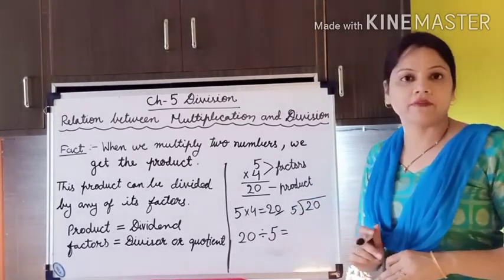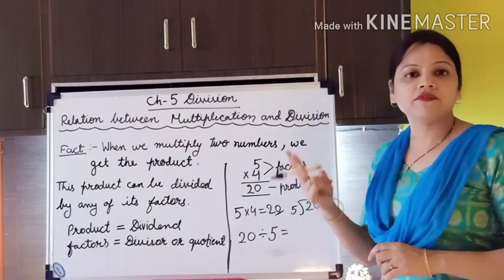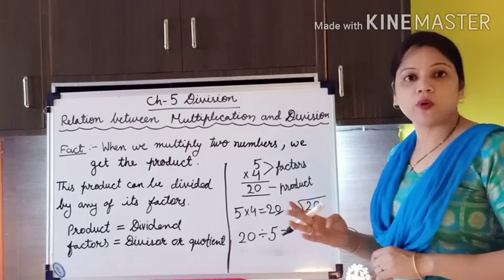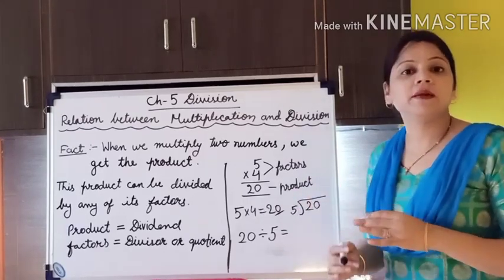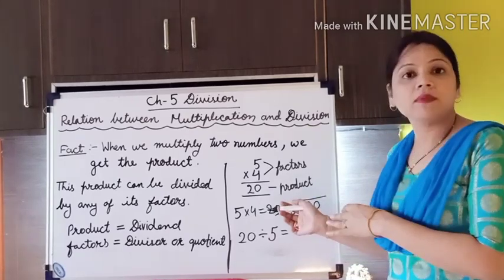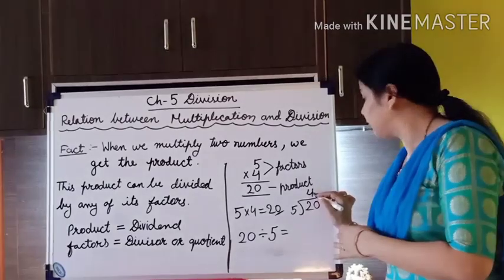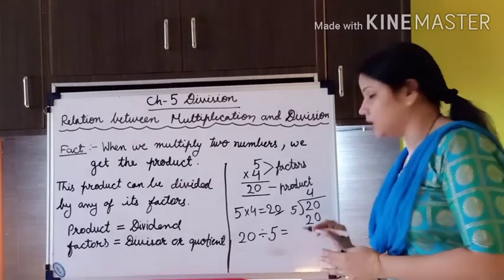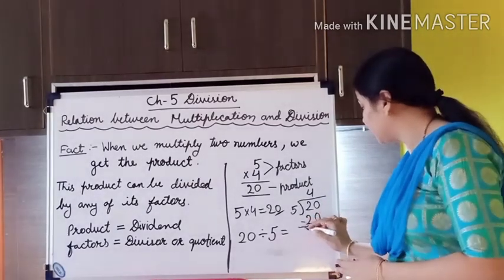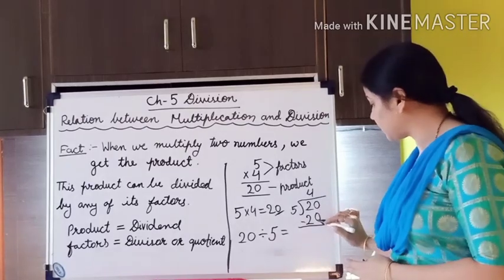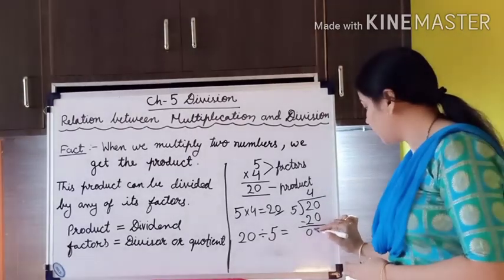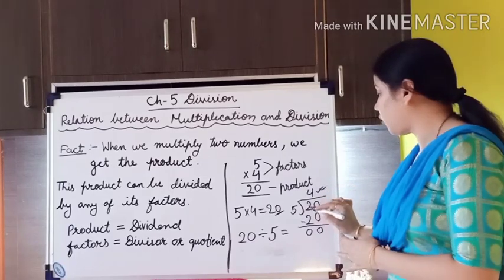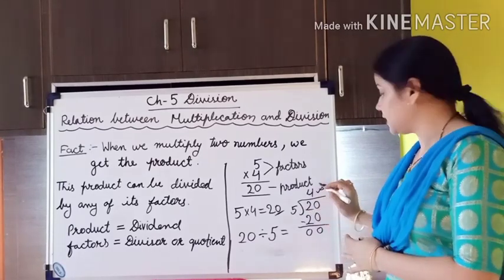We check the table of 5: 5 ones are 5, 5 twos are 10, 5 threes are 15, 5 fours are 20. We got 20 in the table of 5 — 5 fours are 20 — so we write 4 as the quotient. We subtract and get 0 remainder. The answer after division is the quotient.